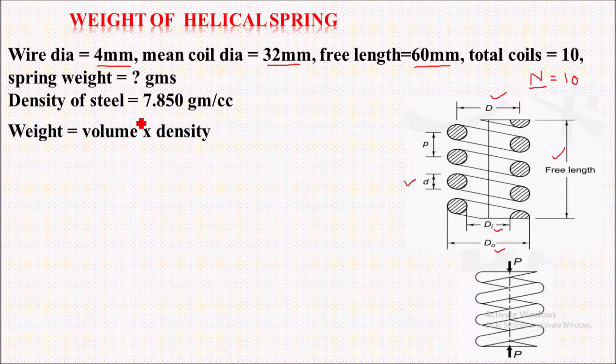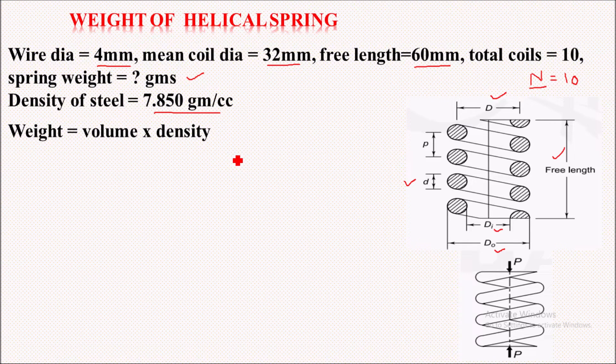So we have to calculate the spring weight in grams, provided the density of steel to be 7.850 grams per cc.